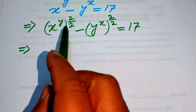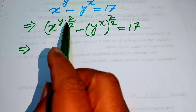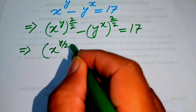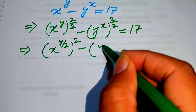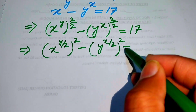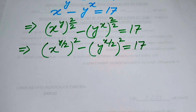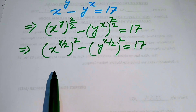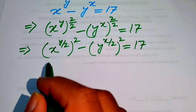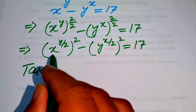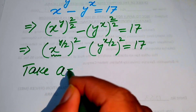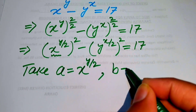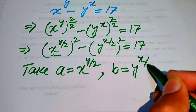We multiply the exponents y and x each by 1 over 2, and rewrite the expression as x to the power of y over 2 whole squared minus y to the power of x over 2 whole squared equals 17. Now we convert this exponential equation into a simple polynomial form by substituting: let a equals x to the power of y over 2, and b equals y to the power of x over 2.